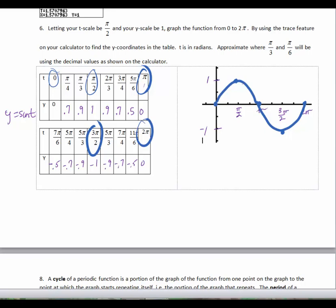And you can see that it has x-intercepts at the beginning, halfway, and at the end. The max is 1, the min is negative 1, and we'll categorize this in a minute.